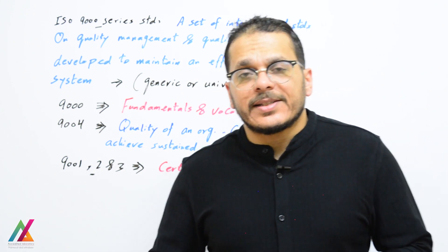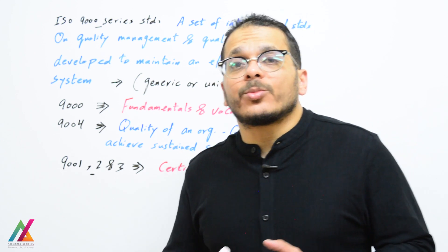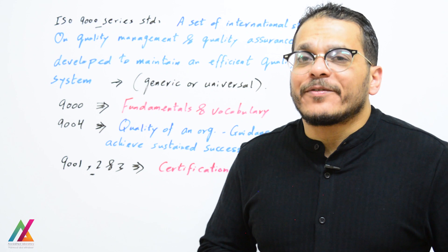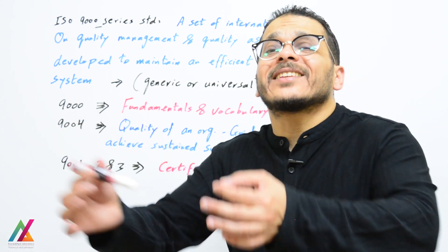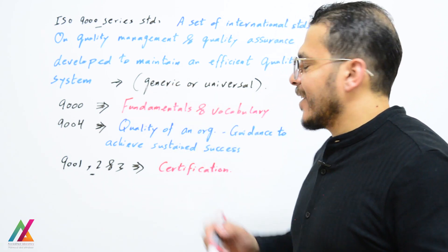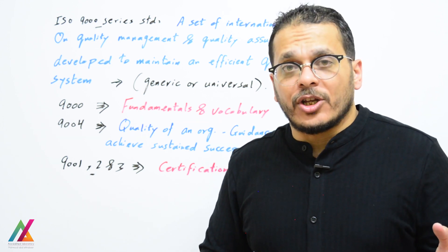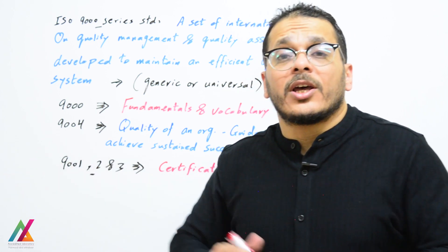ISO 9000 series standards are a set of international standards on quality management and quality assurance developed to maintain an efficient quality system. This quality system can be applied to any type of industry or organization, so it's a generic or universal standard, not specific for certain industries like ISO 17025, which is specific for testing and calibration laboratories.